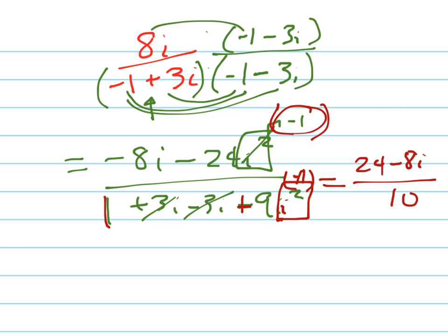Now let's write it in complex, or in standard form. Distributing the 10 to both of them, and then of course I'm going to simplify. Those both have a 2 in common, so that's 12 fifths minus 4 fifths i.